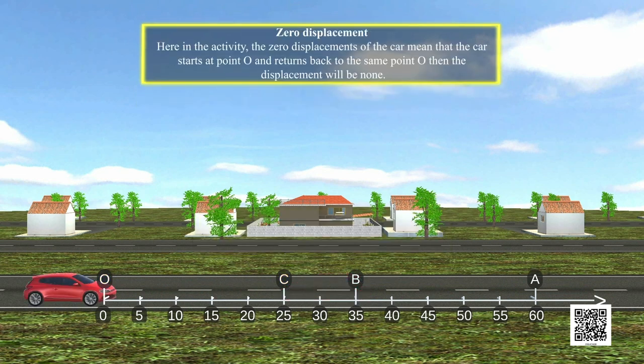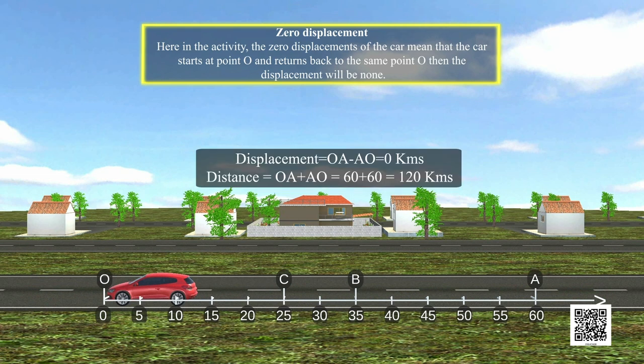Zero Displacement: Here in the activity, the zero displacement of the car means that the car starts at point O and returns back to the same point O. Then, the displacement will be none. That is, OA minus AO equals 0 kilometers.